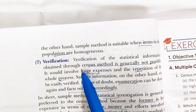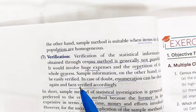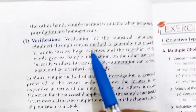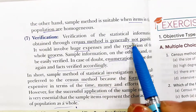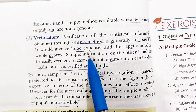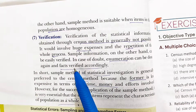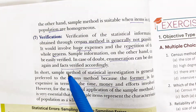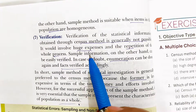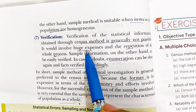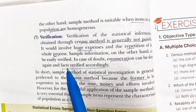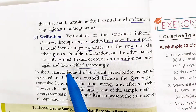Verification: in the census method, re-collecting data involves huge expenses and it is difficult to repeat the whole process — it is very exhausting. But sample information can be easily verified because you only need to revisit a small number of items.